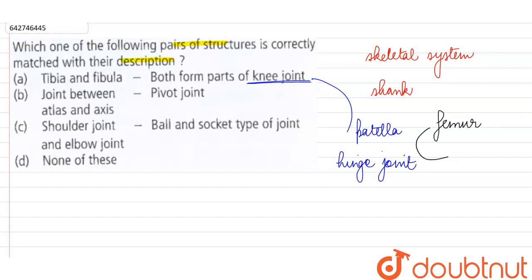With the help of the patella at the hinge joint of the knee. But here they are naming both the bones tibia and fibula, so this combination is not correct. In the knee joint we are going to find the femur and tibia.